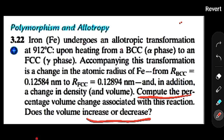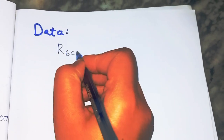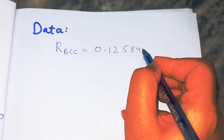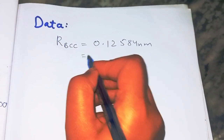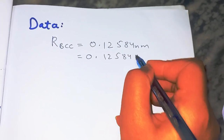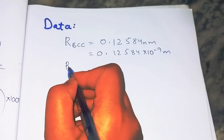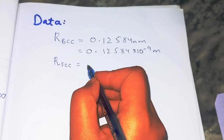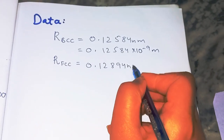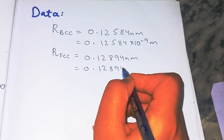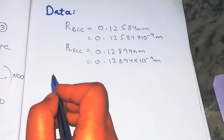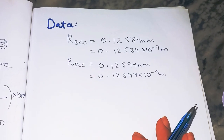Let's write down the given data. The radius of the iron atom in BCC form is r_BCC = 0.12584 nm = 0.12584 × 10⁻⁹ m. The radius in FCC form is r_FCC = 0.12894 nm = 0.12894 × 10⁻⁹ m.